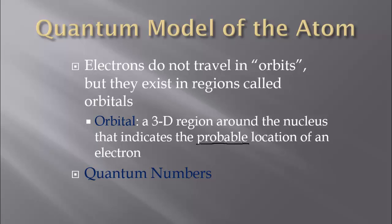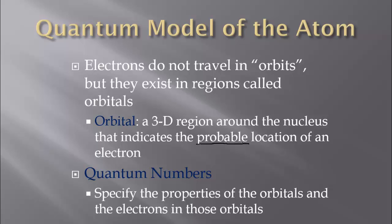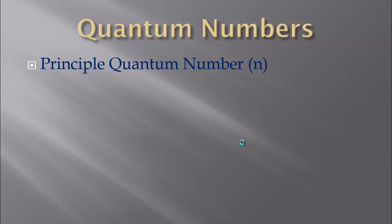To describe the electron fully — what energy it carries, where we think it's located, and how far from the nucleus — we come up with quantum numbers. These will specify the properties of the orbitals and the electrons that are in those specific orbitals, or those regions around the nucleus. There are four quantum numbers. Interestingly, the quantum numbers aren't exactly numbers; they're more like letters. But there are four of them to help describe, and we call them quantum numbers.